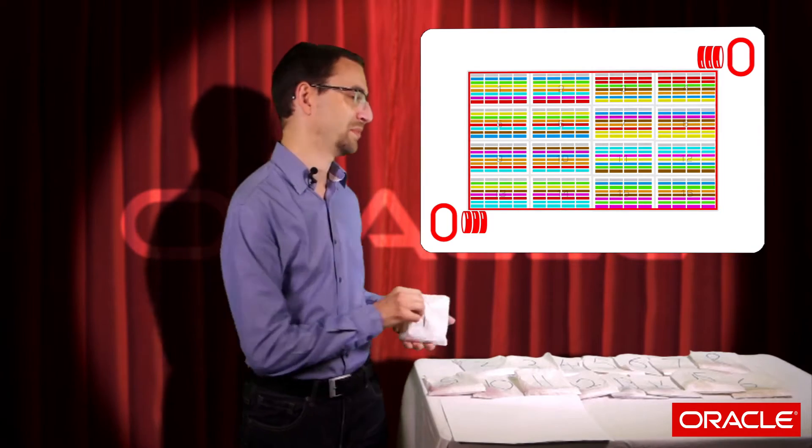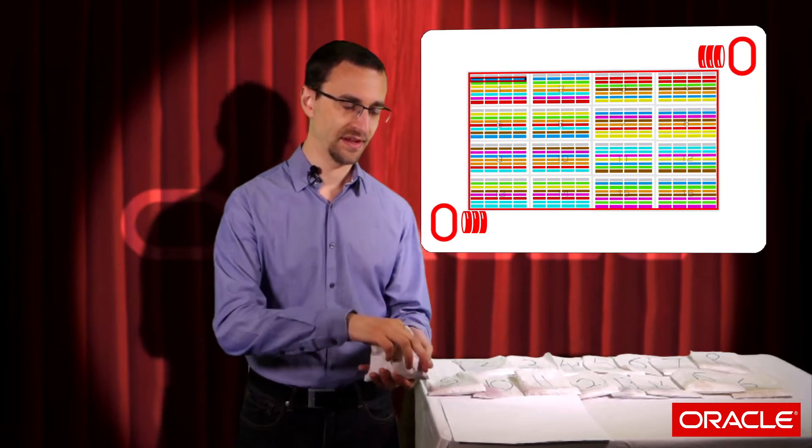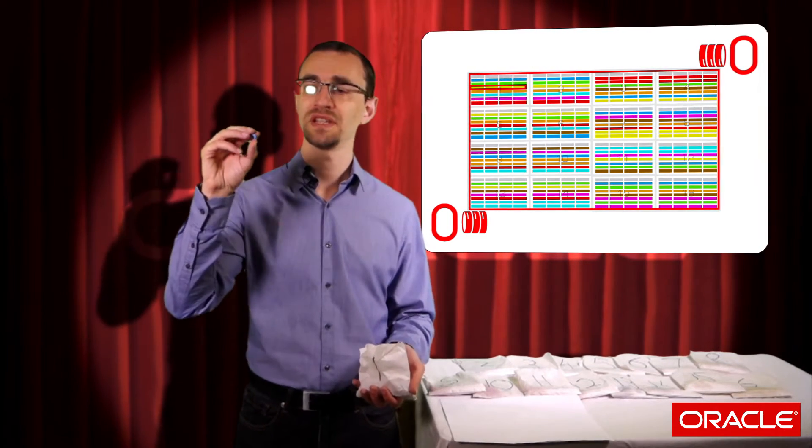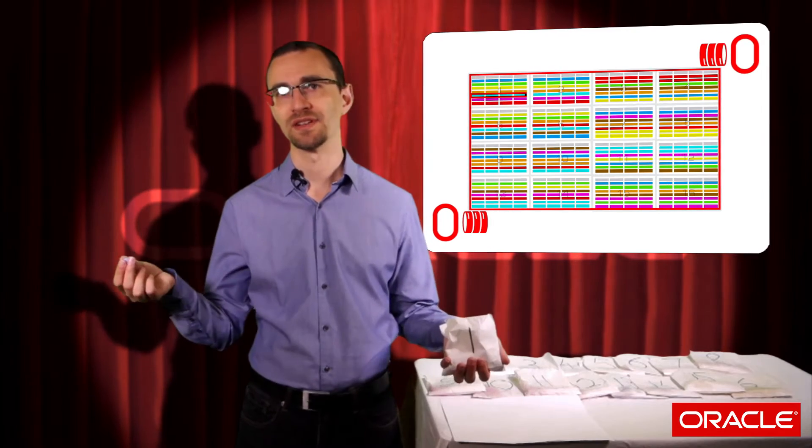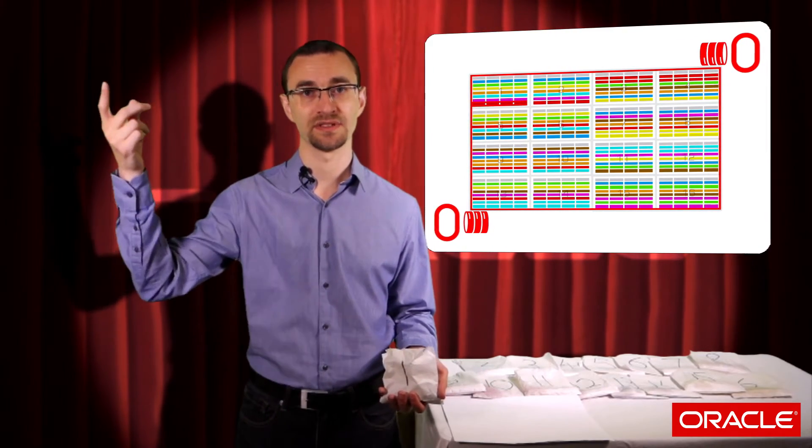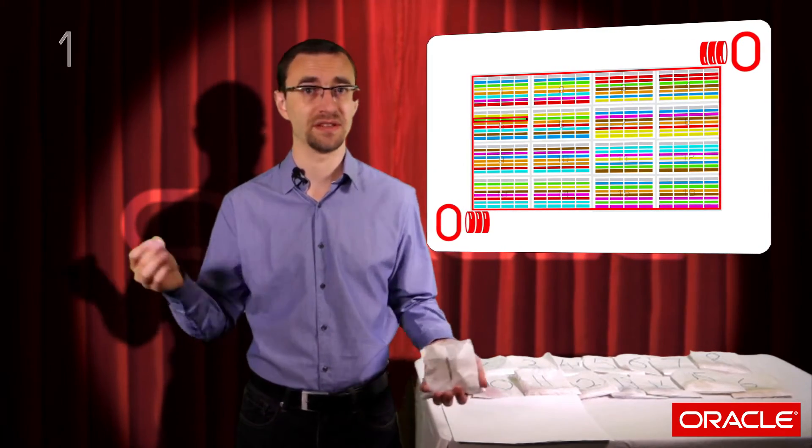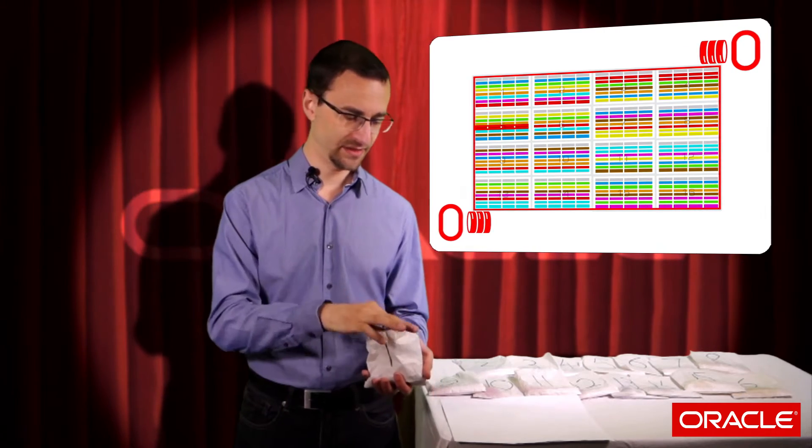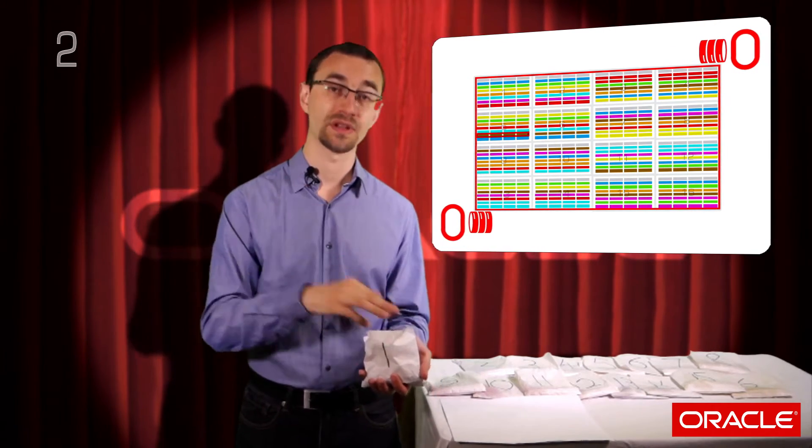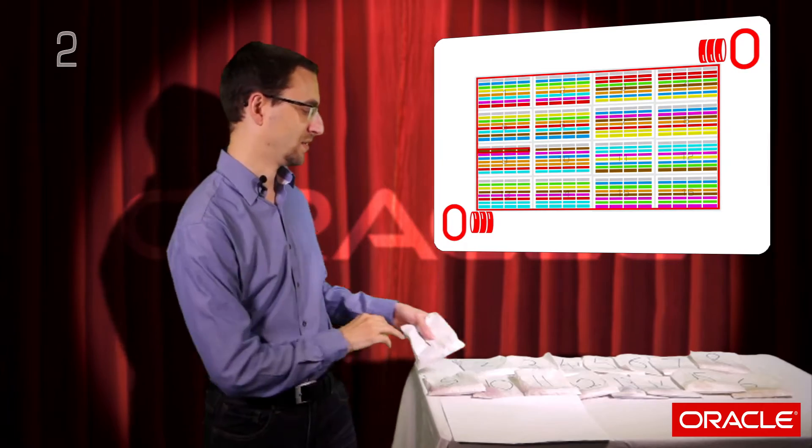Let's compare using the full table scan to using the index to answer this question. First up, full table scan. I've got to pick up every single bag, look at every single sweet, and see which colour it is. If it's red, I'm incrementing a counter. If it's not, I don't. So I'll pick up each sweet, put it back, check if it's red or not, and do this for every single bag and every single sweet.